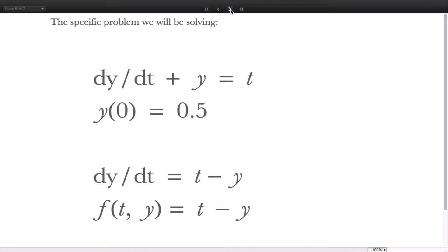The specific problem that we will be solving is the first order differential equation dy/dt plus y is equal to t with y of 0 given as 0.5. To put this equation in the normal form, we isolate, solve for dy/dt and thus write our slope function as being t minus y.